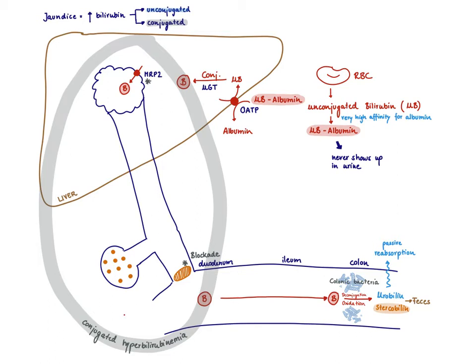So it gets here, the bilirubin, but then cannot get further, cannot be released in the duodenum and gets pumped back out again. These are the most common causes, in particular the gallstones, for conjugated hyperbilirubinemia.